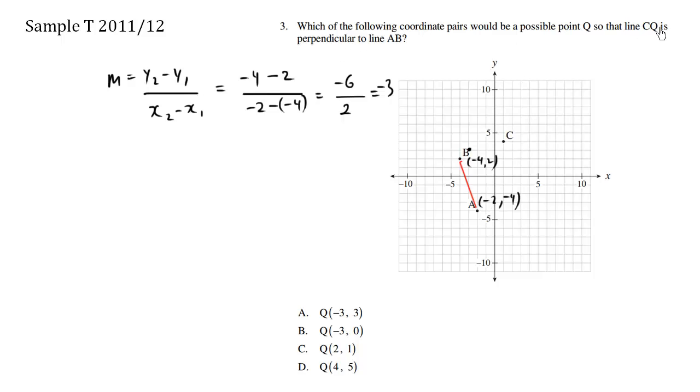So we want CQ so that it's perpendicular at a right angle to line AB. We know that the slope here is negative 3. We want a line perpendicular, so M1 is negative 3. So M2, the slope that is perpendicular to this line, is going to be the negative reciprocal of negative 3. So the sign flips to be positive, and we take the reciprocal, which is one-third. So we want a slope of one-third.